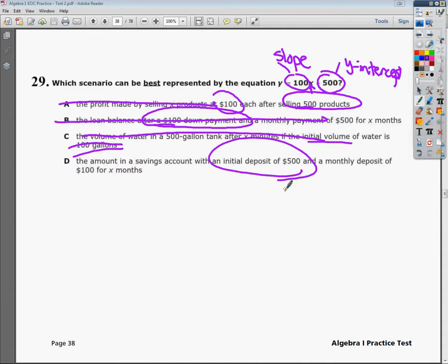And a monthly deposit of $100 for x months. So each month, my change variable or my slope would be the $100, and it changes depending on how many months I have. But I'm always starting out with that 500. So D is the answer that matches the criteria set up in the equation.